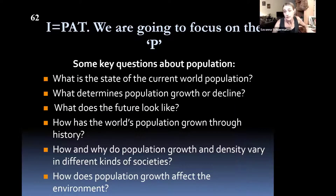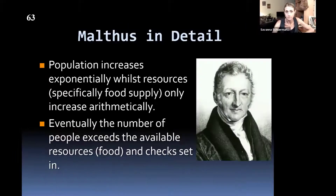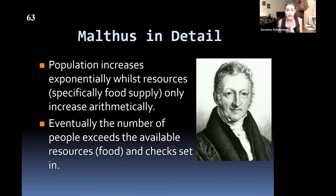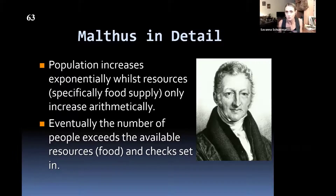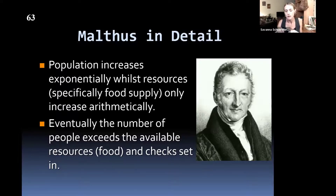We're going to focus on the P — population. Malthus wrote this essay in 1798. What he said: population increases exponentially — geometrically — while resources, specifically food, only increase arithmetically, meaning linearly. He assumed fertility was around six, but four would actually make it to reproductive age, which was accurate for the time. Food only increases linearly: you plant one field, a second, a third. This was pre-industrial revolution, so not too far off. Eventually, population growth is going to outstrip food supply.